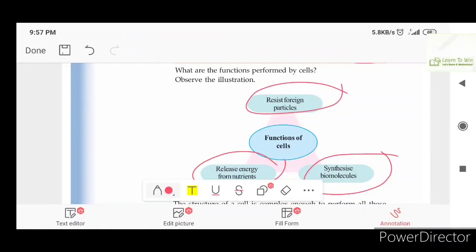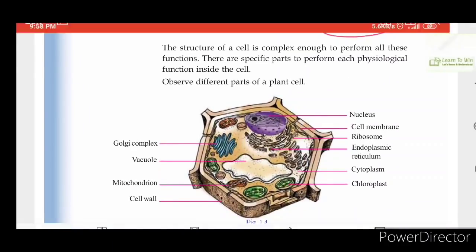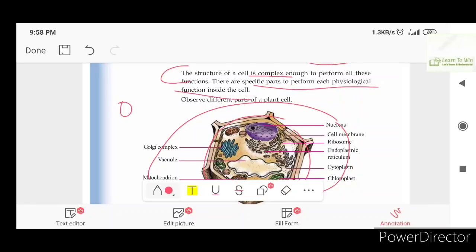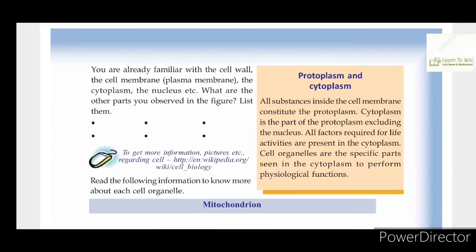If we learn the structure of cells, we will learn how they function. The functions are complex. We will cover the cell wall — it is a plant cell structure. You are now familiar with cell wall, cell membrane, cytoplasm, nucleus, etc. What are the other parts you observed in the figure? List them.